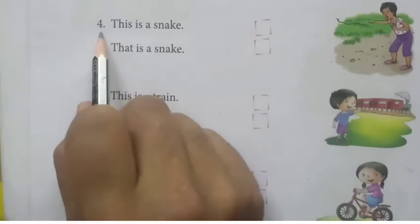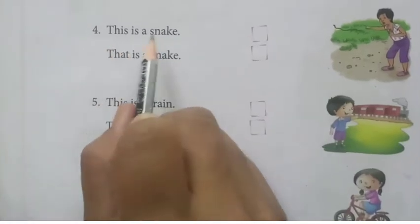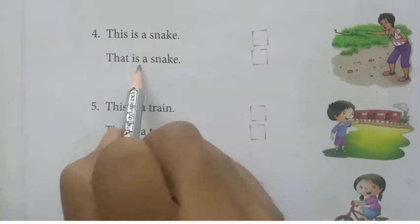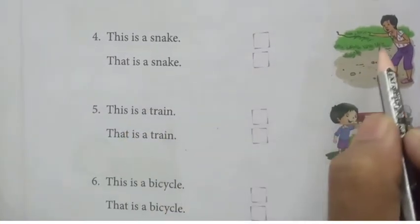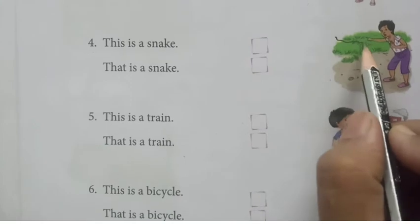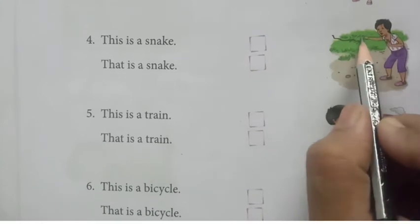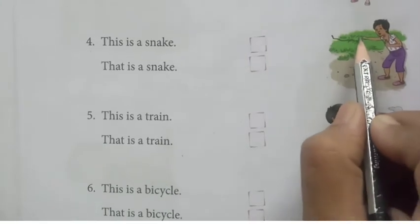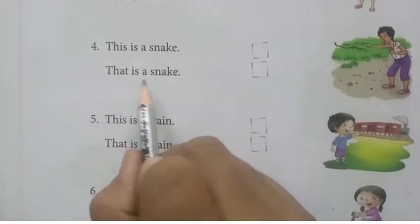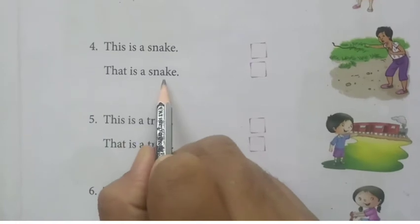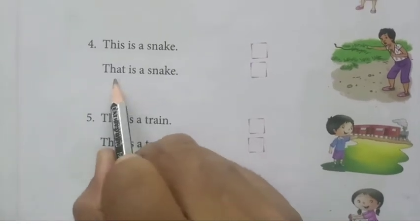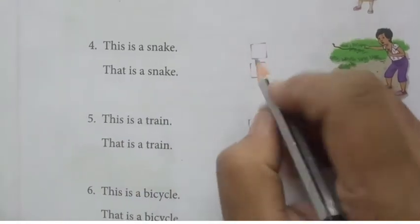Number 4. 'This is a snake' or 'That is a snake'? Snake kaha par hai? Far — in the grass. So, what we have to use? 'That.' That is a snake. Tick — that is a snake.